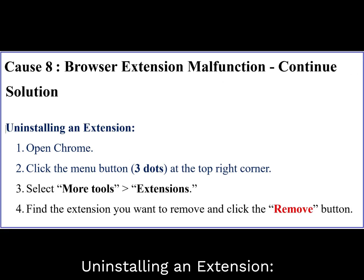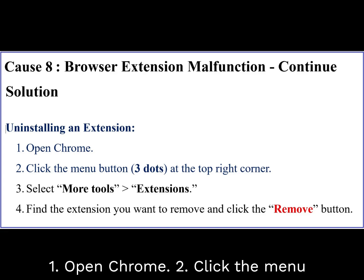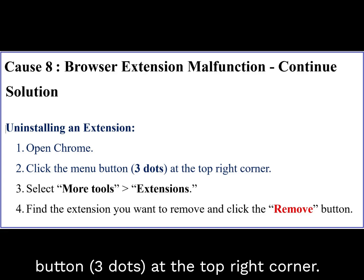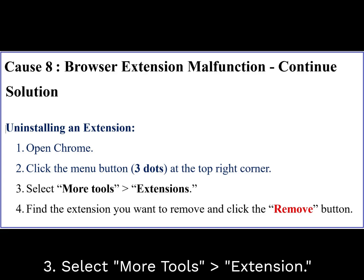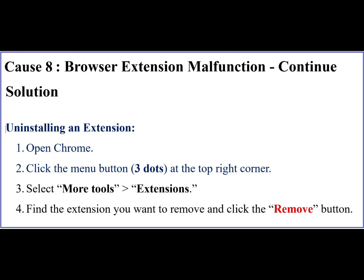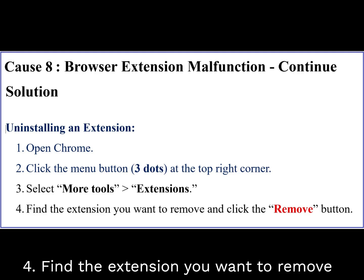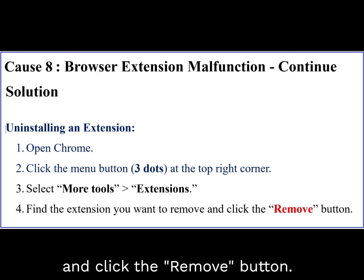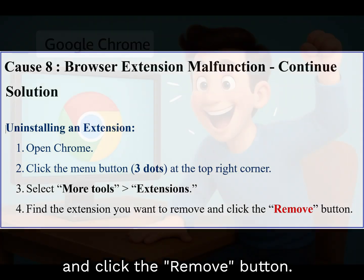To uninstall an extension: open Chrome, click the Menu button (three dots) at the top right corner, select More Tools, then Extensions. Find the extension you want to remove and click the Remove button.